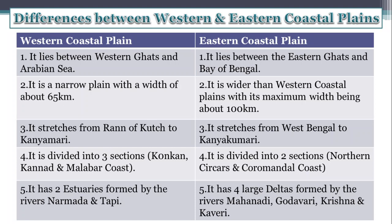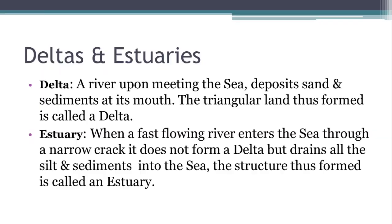Fifth: Western Coastal Plain has two estuaries formed by the rivers Narmada and Tapi. Eastern Coastal Plain has four large deltas formed by the rivers Mahanadi, Godavari, Krishna, and Kaveri.